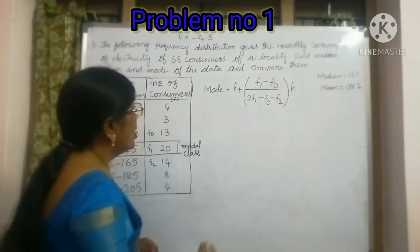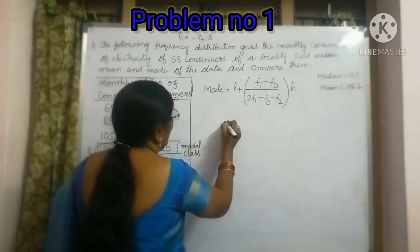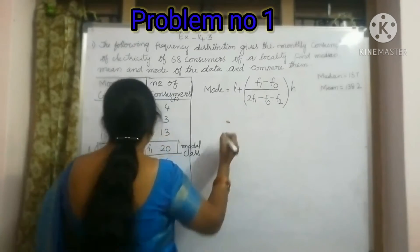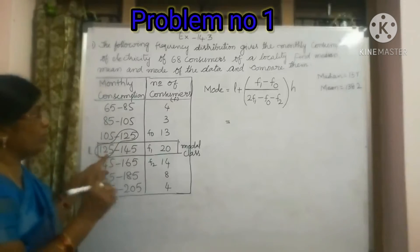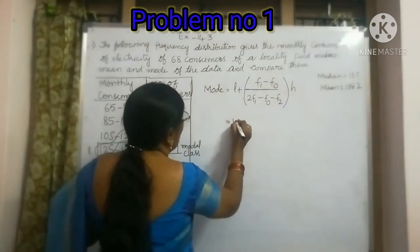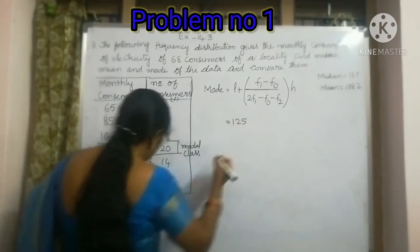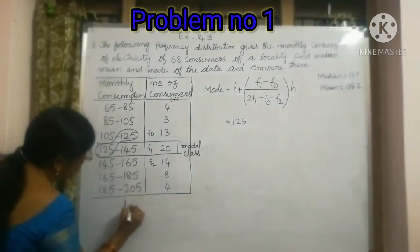Now, let us write L is equal to... see here, the average of these two will give you 125. So we have to write L as 125. Let us write here, L is equal to 125.